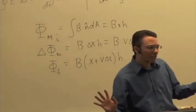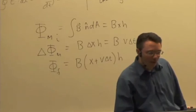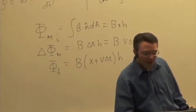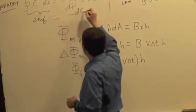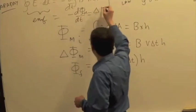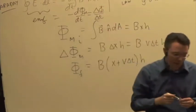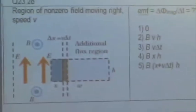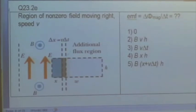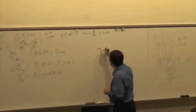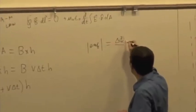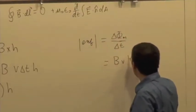So we're just looking for the change: B, v, delta t times h. For Faraday's law, the EMF equals negative d(magnetic flux)/dt. If we find delta flux over delta t — just dividing by delta t — we end up with B times v times h. So the magnitude of the EMF equals B times v times h.